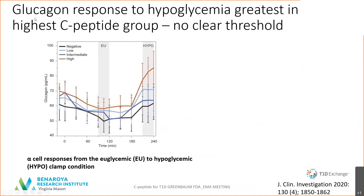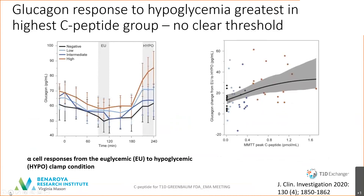Similar data is shown here in response to hypoglycemia from a clamp condition. Among our different groups with no C-peptide or very high C-peptide, those with higher levels of C-peptide had a more physiological response to hypoglycemia, with secretion of glucagon. But once again, when plotted individually, though there is a strong relationship, there is no clear threshold that would define the level needed to have an appropriate glucagon response to hypoglycemia.